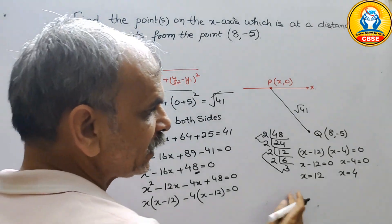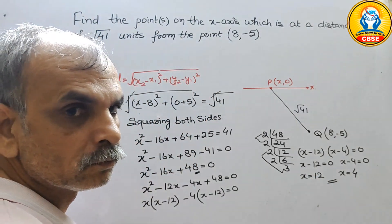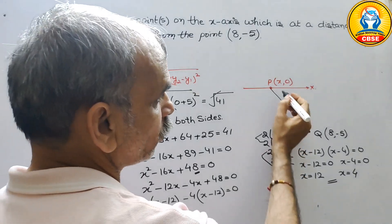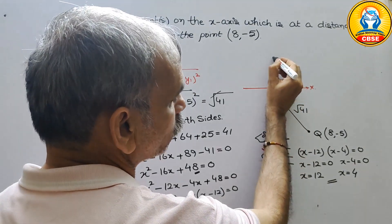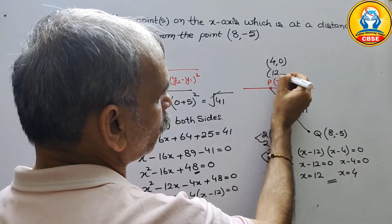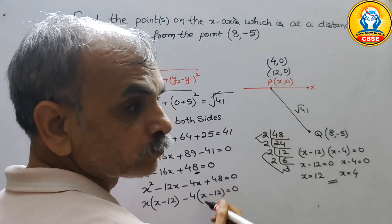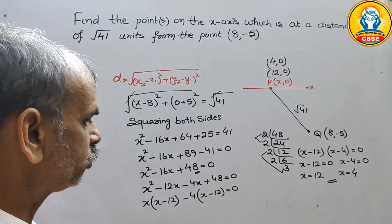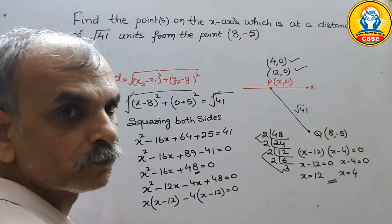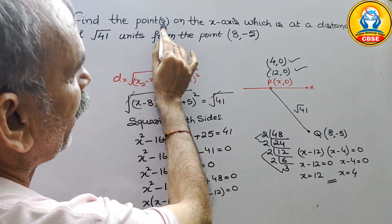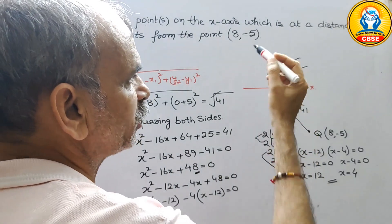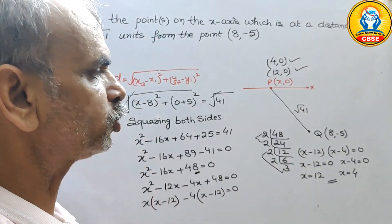ठीक है, तो X की आपकी दो values आ गईं। तो आपके coordinates उस point के क्या हो गए: X comma 0 था, तो एक हो जाएगा (4, 0) और दूसरा (12, 0)। तो आपके दो points आएंगे। इसने यहां पर 'point' और आगे 'points' लिखा है, तो इस तरह से आपको इसको निकालना है।